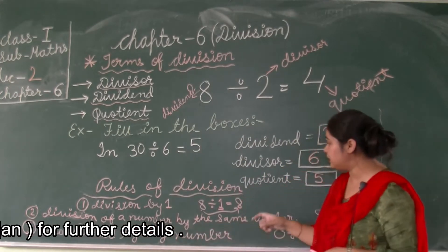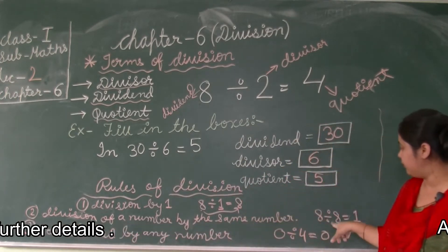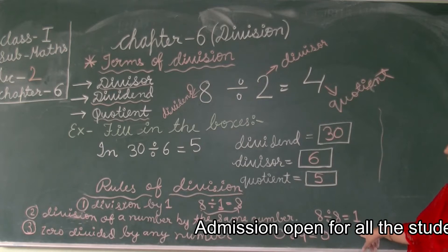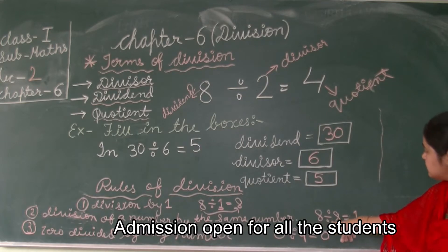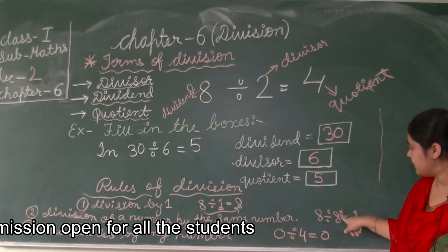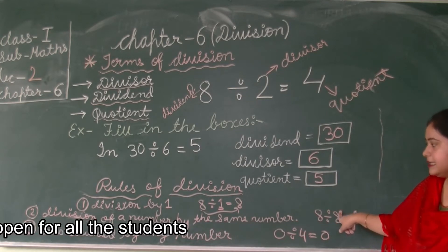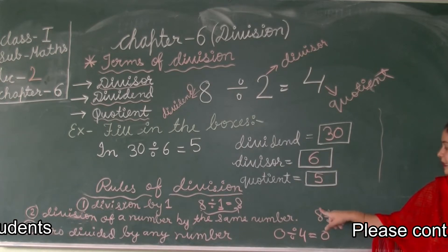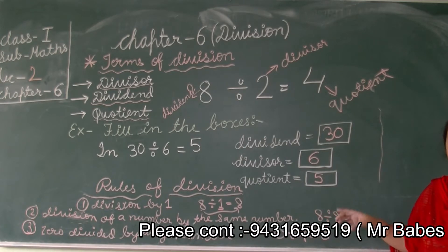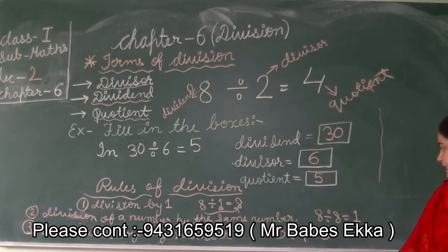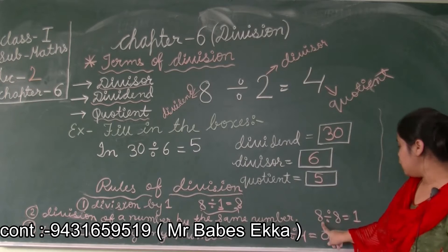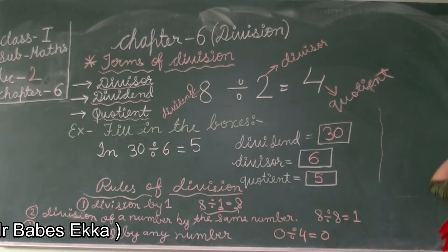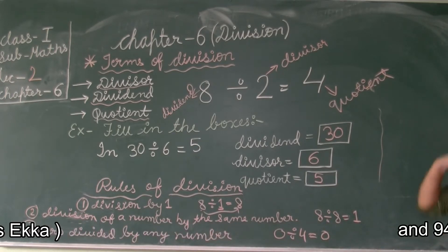Rule number two is division of a number by the same number. When a number is divided by itself, the result will be one. For example, 8 divided by 8 — both numbers are the same — so our result is 1. This is our second rule of division.